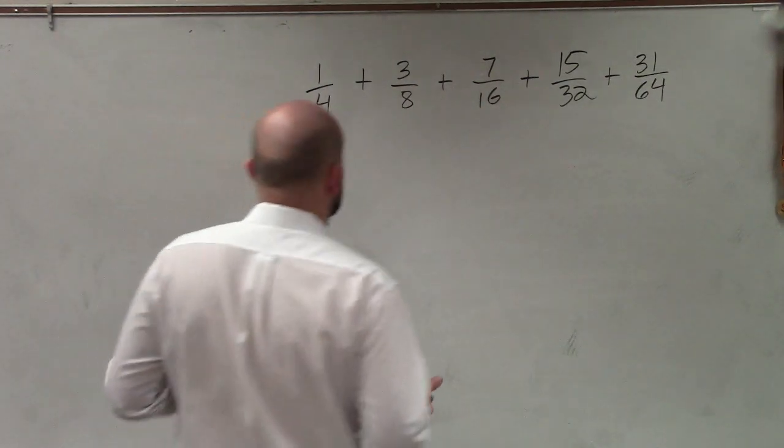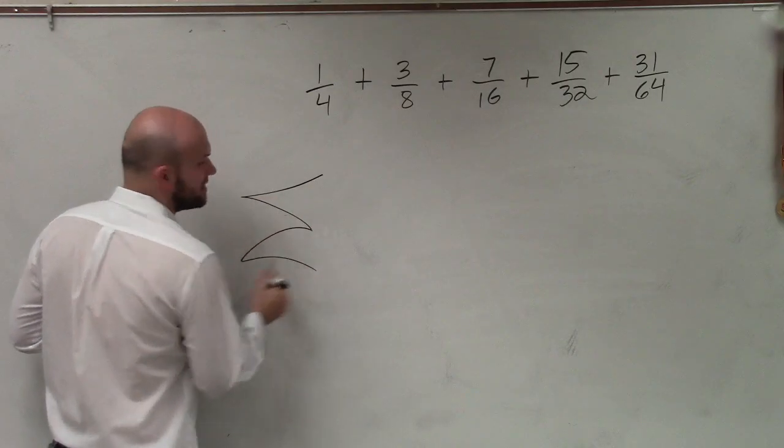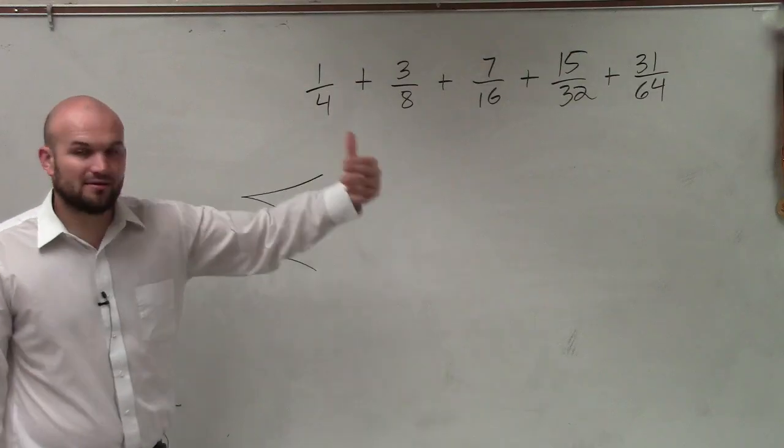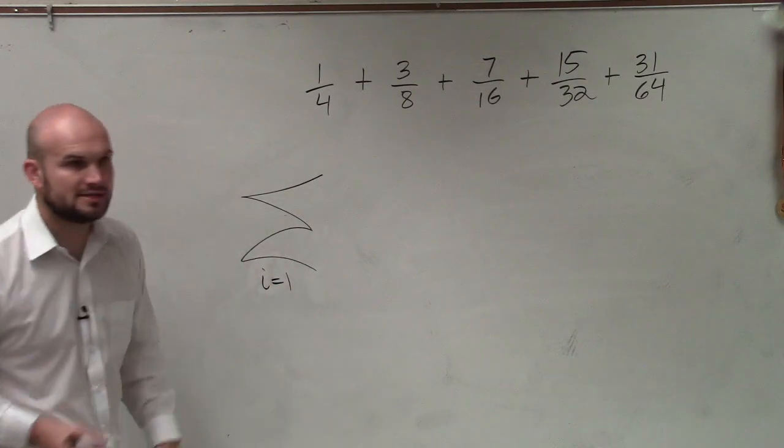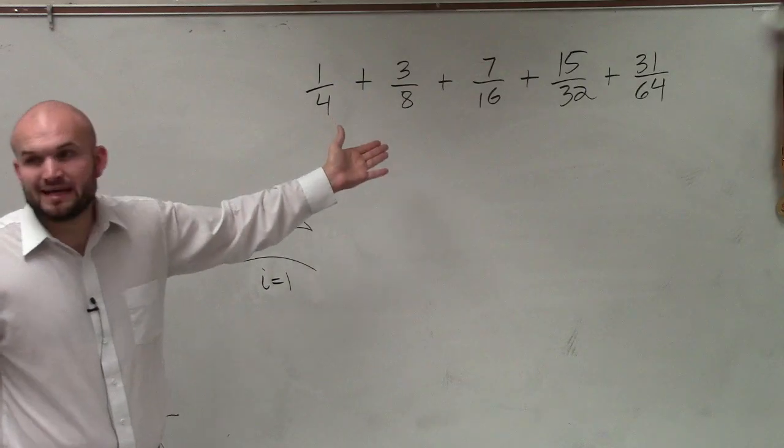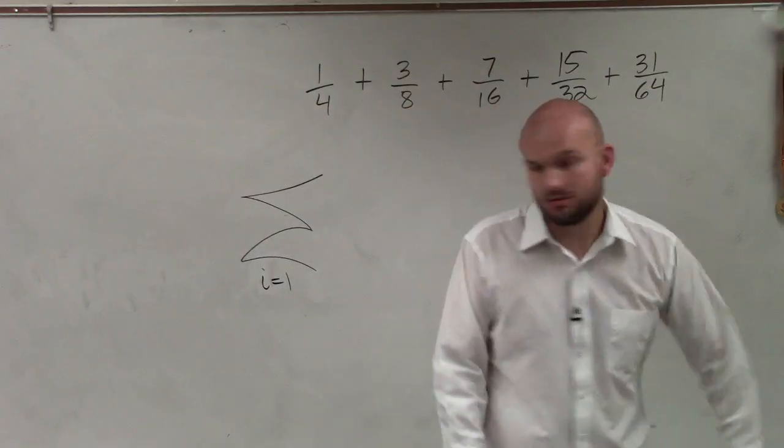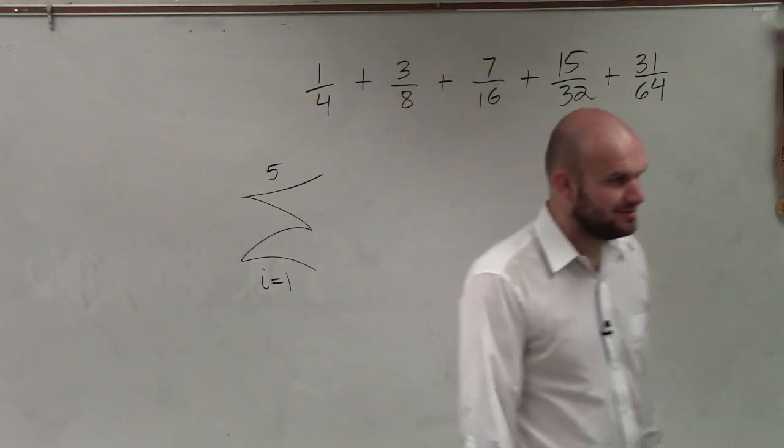So the easiest way that I like to take a look at this is we write our sigma, which is going to represent our sum. We look at this, and what I'd like to always start is always assume that you can start with 1. Then say, well, where are we going to end? Well, if I start at 1, then that will be 1, 2, 3, 4, 5. So then I put a 5 up there. That's the easy part, right?